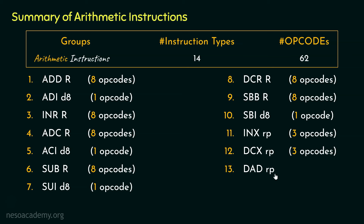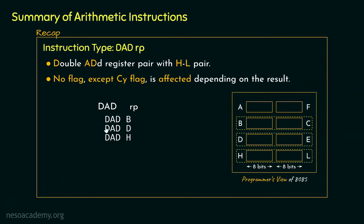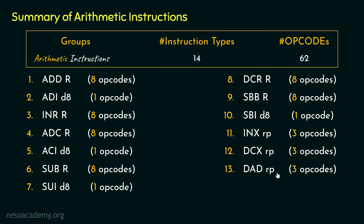Coming to the next type, DADRP — double add register pair with HL register pair. In 8085, since using the accumulator we can only add 8 bits at once, here we are adding the contents of any register pair with the HL register pair — adding 16 bits at once — which is why we call it double add. In this instruction type we have 3 different instructions, so 3 opcodes.